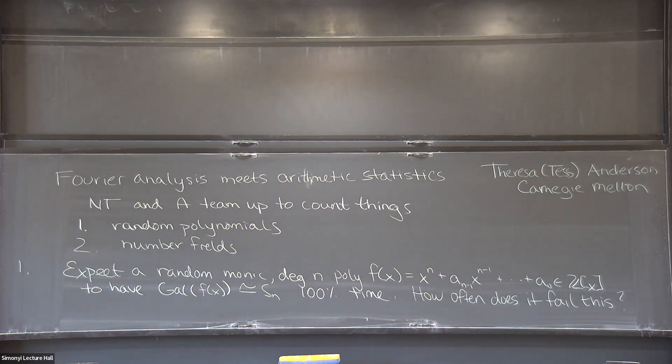An audience member asks what we mean by 'random,' since the count depends very much on how you order things. We will make this more precise — we're going to order polynomials by height, so the word 'random' is in quotes for now. We'll talk about this more shortly, and feel free to interrupt with questions.